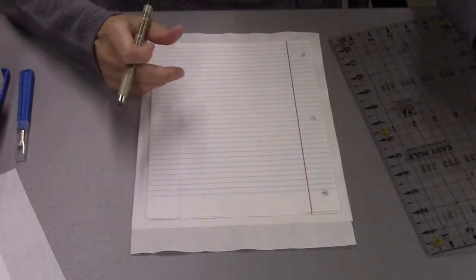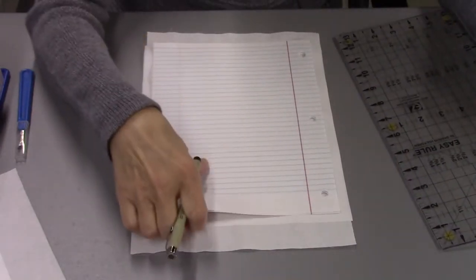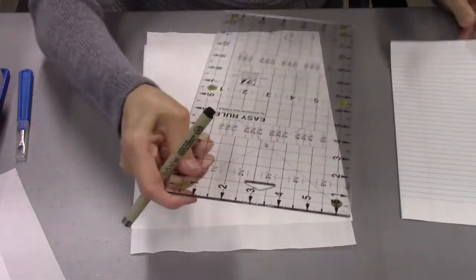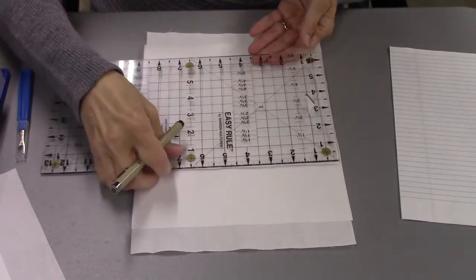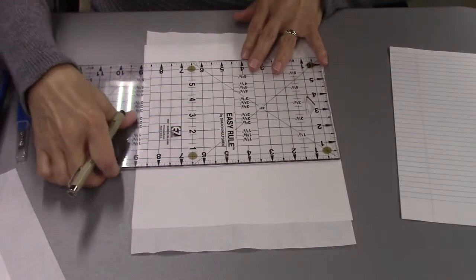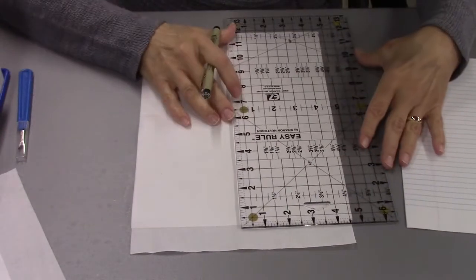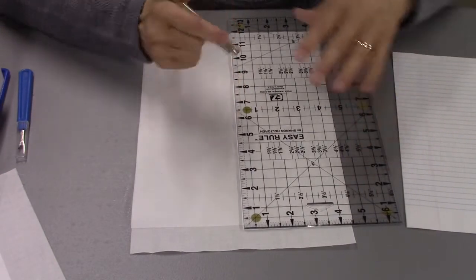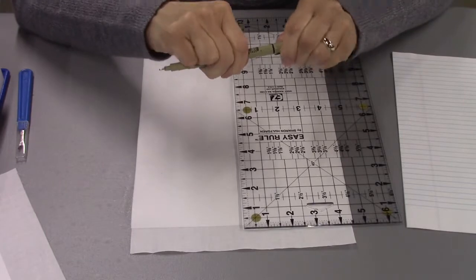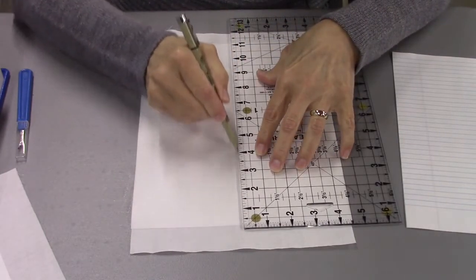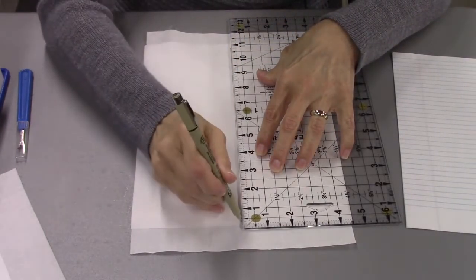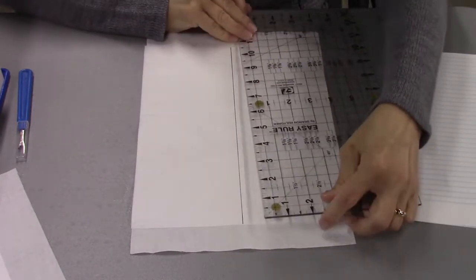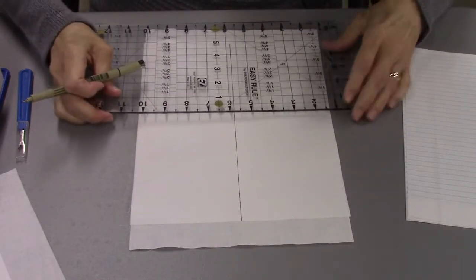I do want to draw some guidelines on here. This is nine, so if I go at four and a half. I'm using a Micron pen, this is a 0.08 nib, so it's a wider nib. Let's see, it's eleven inches so I'm going to go five and a half.